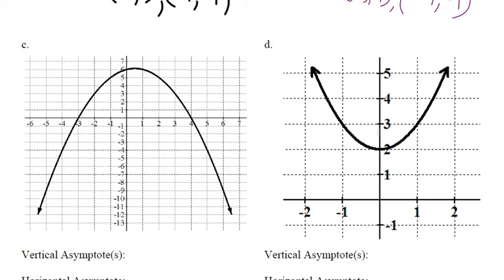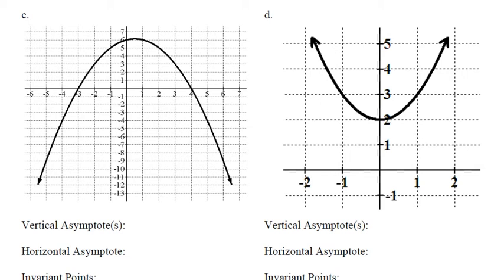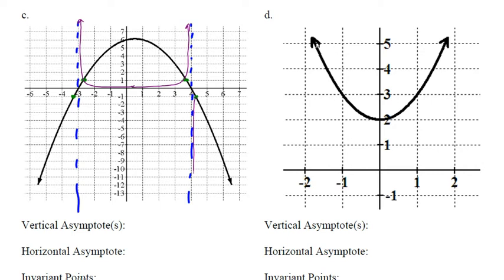These next ones are quadratics. Find the zeros — those are your asymptotes. Go along y = 1 to find invariant points here and here. Go along y = negative 1 to find points here and here. Find the reciprocals of any particular points — this is a little over 6, so it would be about one-sixth. Join points with a smooth curve. The middle part looks like a parabola shape, and we know what the ends look like as we approach the asymptote lines and go to zero going outward.